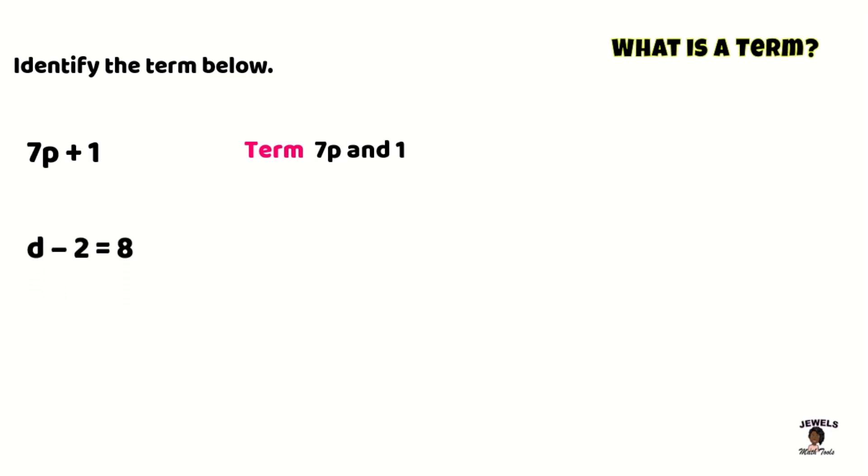What about in this one? What are our terms? If you guessed that your term is d, negative 2—I know it's considered a minus sign, but remember that when we write that constant, we also take the sign with it—so it's going to be considered a negative 2 and 8.